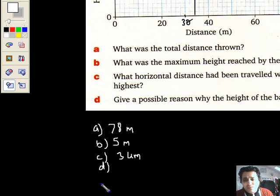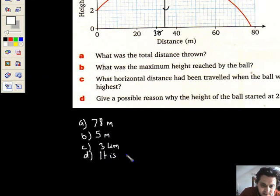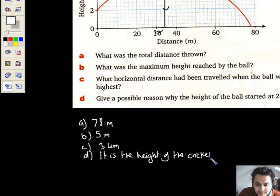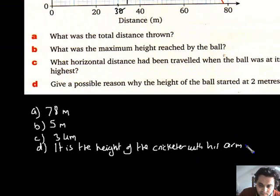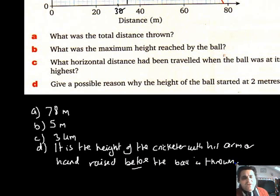Part D. Give a possible reason why the height of the ball started at 2 metres. Well, imagine an average height cricketer. Say, I don't know, man size. And he's about to throw the ball like that. Look, his hand is raised. So that adds extra height to the ball before it gets thrown. So I'm going to say it is the height of the cricketer with his arm or hand raised before the ball is thrown. All right, that's what I'm going to go with. The height of the chap plus the extra little bits above his head before he throws the ball.